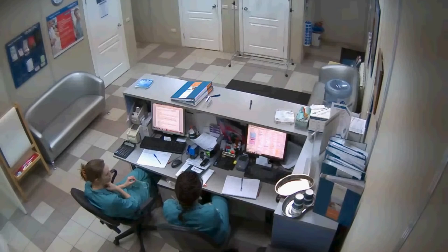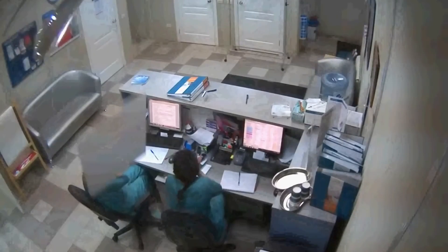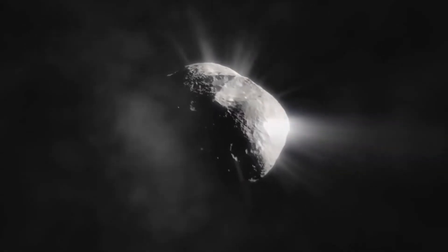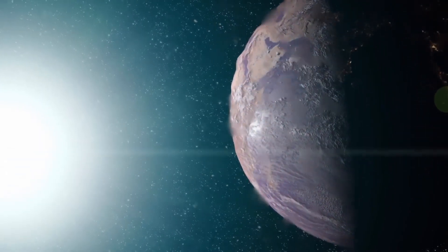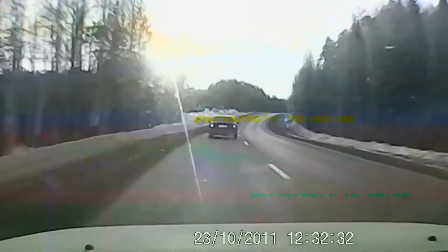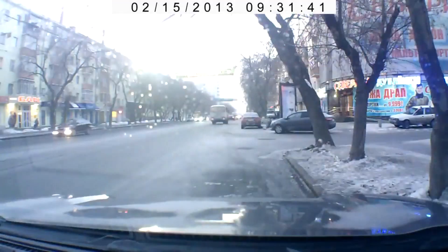A meteorite exploded in the sky in the southern Urals. The power of the explosion was 450 kilotons, according to NASA. It's like 20 Hiroshimas. And even now, 10 years later, scientists don't know everything about that event.